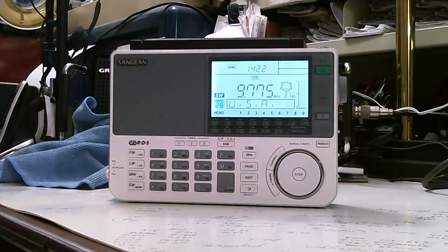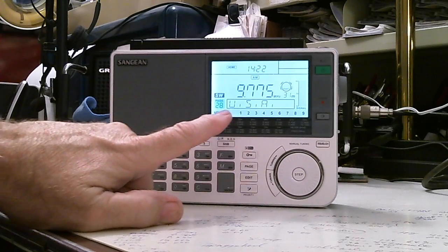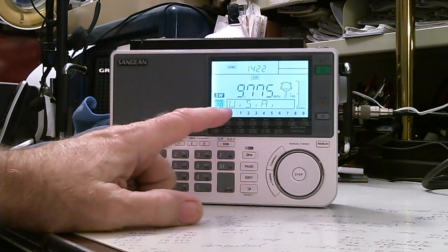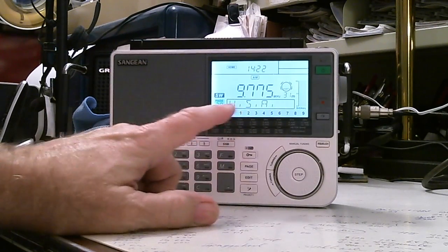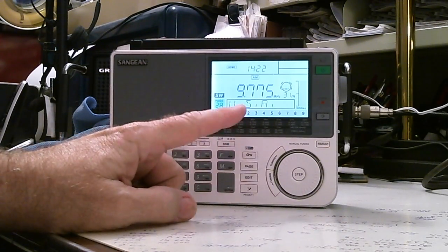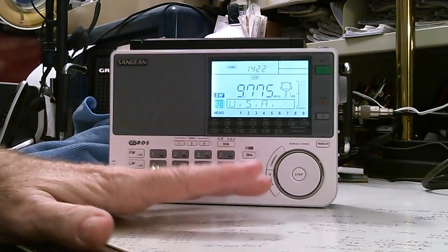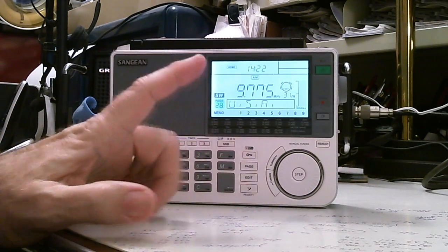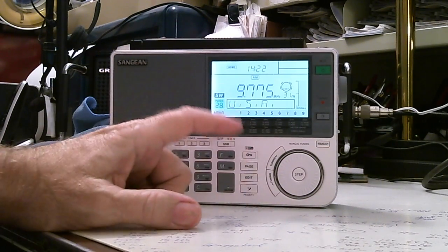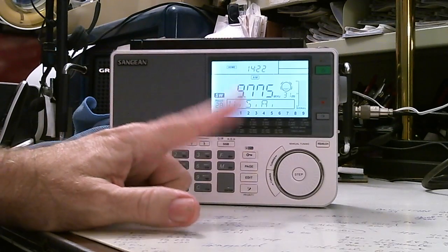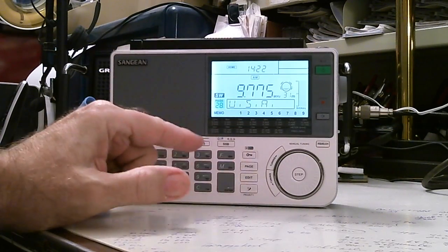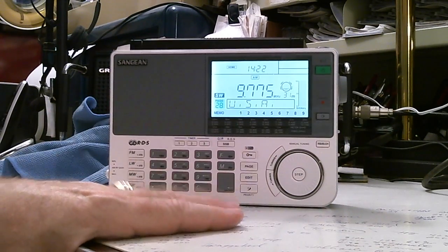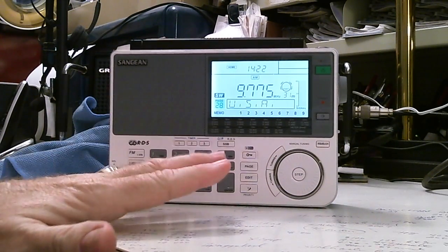The other thing that's nice about it, right now I'm pointing to USA page, is that you can put in an alphanumeric to tell you what that station is. The memory is set up in pages. For shortwave, which is what we're mainly interested in, you have up to 39 pages, and each of the pages has nine memory locations, so that's a lot of memory storage.